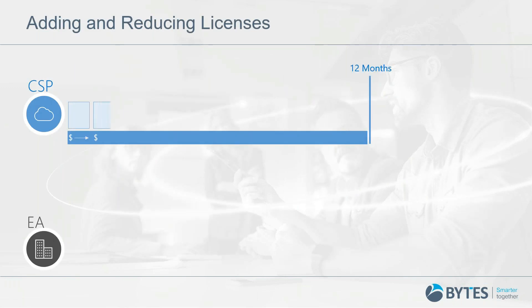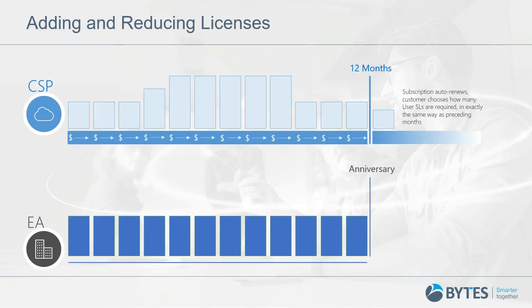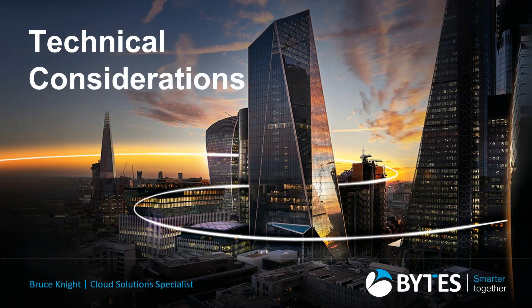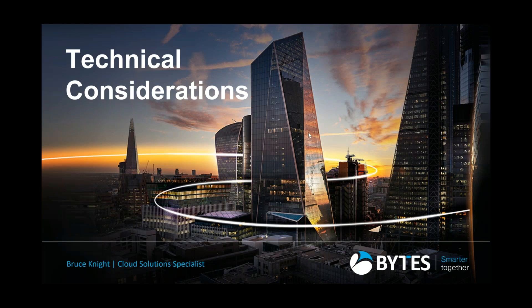As you'll see from the graphics on screen, CSP does allow you to increase and decrease whenever you like. The EA is pretty static where you can stay the same or only increase up until the anniversary point, at which point you can obviously decrease based on how many licences you need. I'm going to hand over to Bruce, who will talk through the technical considerations and potential risks in either downgrading a licence or removing a user entirely.